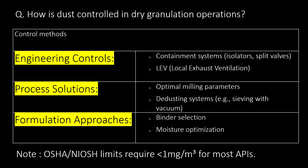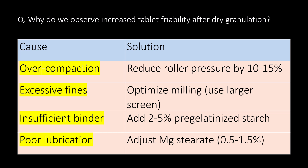How is dust controlled in dry granulation operations? We can implement engineering controls, process solutions, and formulation approaches to control dust. Why do we observe increased tablet friability after dry granulation? Common causes include over-compaction, excessive fines, insufficient binder, and poor lubrication.